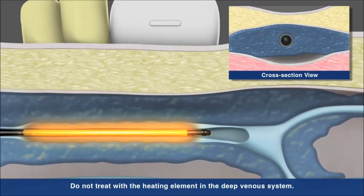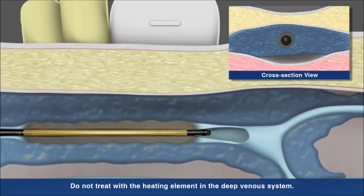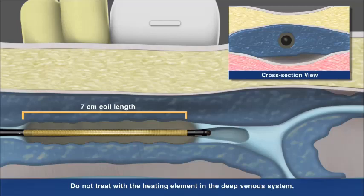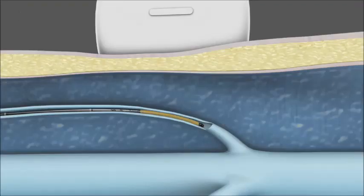The benefit procedure uses a segmental ablation technique, which heats a full 7 cm vein length in one 20-second interval. Doctors also have the option of treating shorter refluxing vein lengths with the closure fast 3 cm catheter, which heats the vein in 3 cm segments.